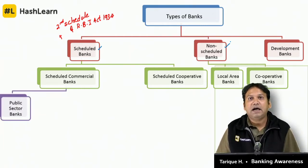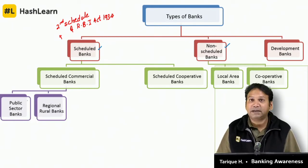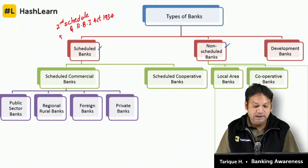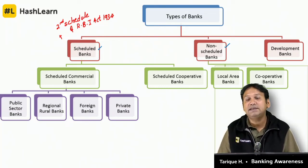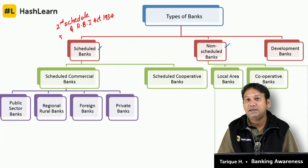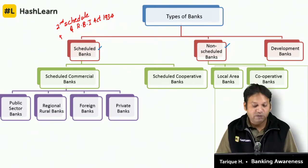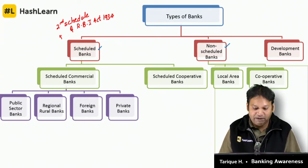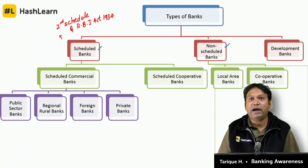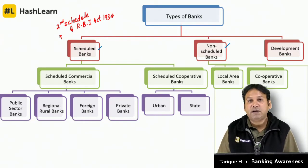Scheduled commercial banks are of four types: public sector banks, regional rural banks, foreign banks and private banks. Public sector banks are those where major shareholding is by the government, which includes nationalized banks, SBI, IDBI, and the Indian Post Payments Bank. Scheduled cooperative banks are of two types: urban cooperative banks and state cooperative banks.